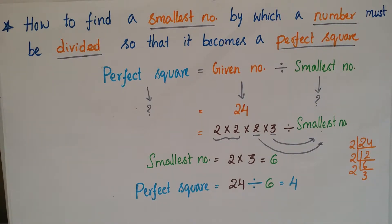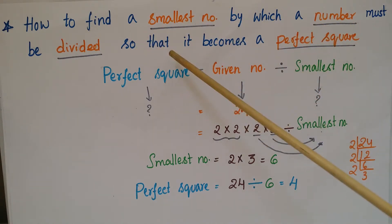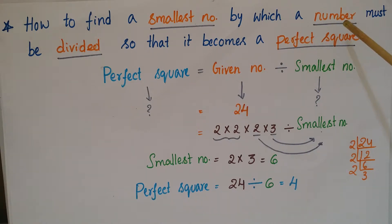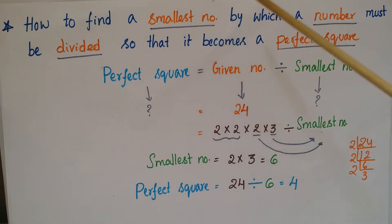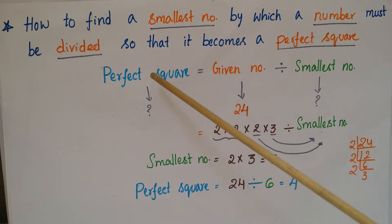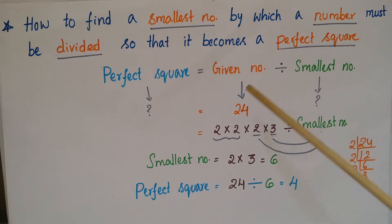Today I am going to explain how to find the smallest number by which a number must be divided so that it becomes a perfect square. We have to divide the given number by the smallest number so that the result is a perfect square. We can write this as: perfect square equals given number divided by smallest number. Let us go through an example.